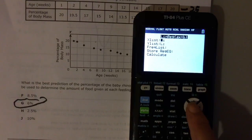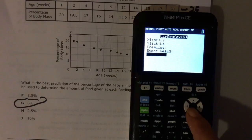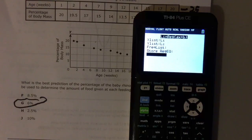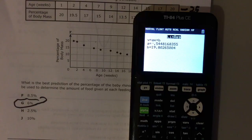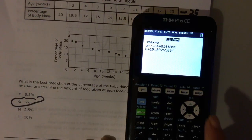Let me see where it is. Okay, scroll down to calculate, hit enter, and it gives you your A which is your slope and your B which is your Y intercept.